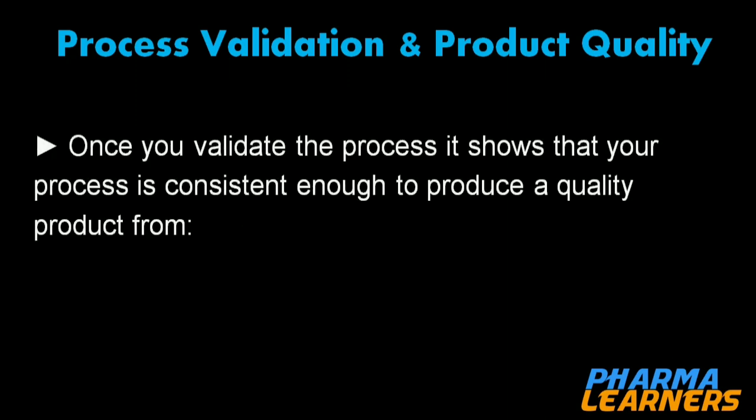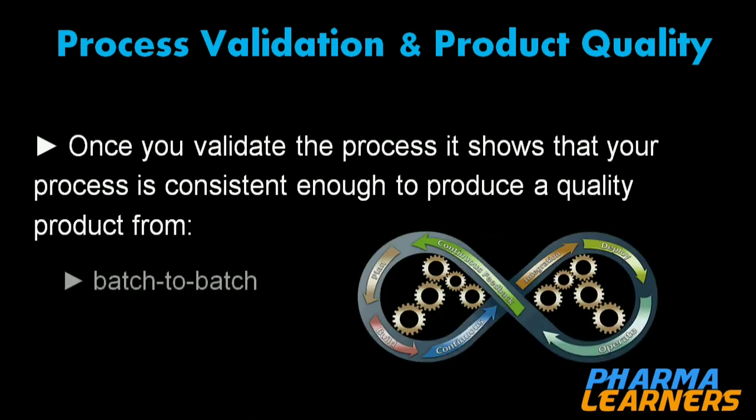The question is how to correlate process validation with product quality. Once you validate the process, it shows that the process is consistent enough to produce a quality product from batch to batch and unit to unit. This is how process validation is important for getting a quality product.